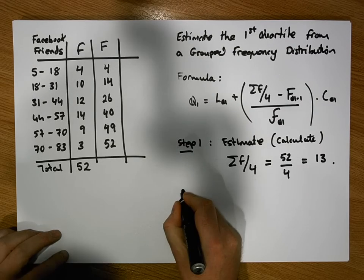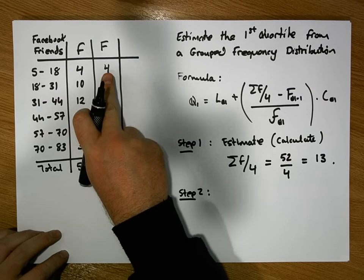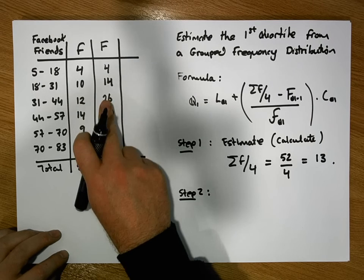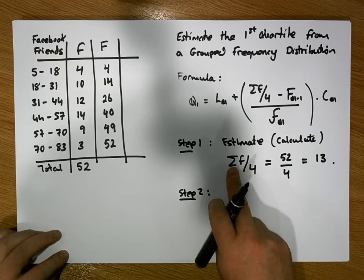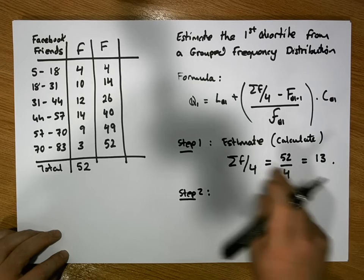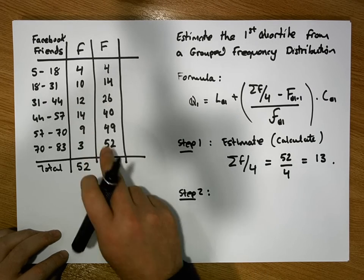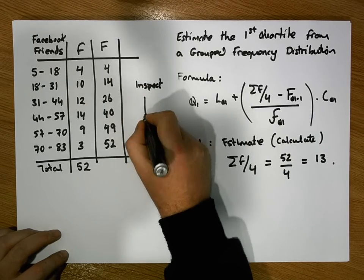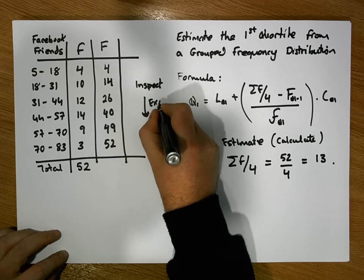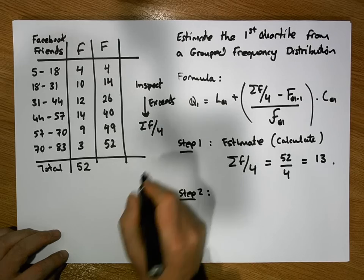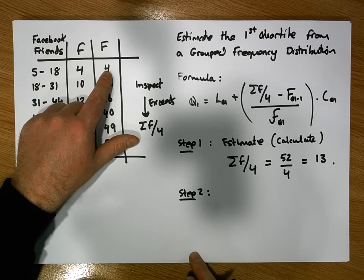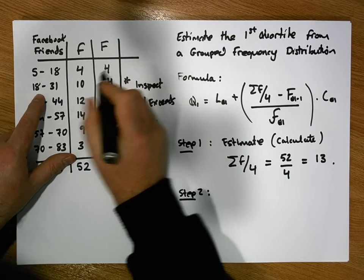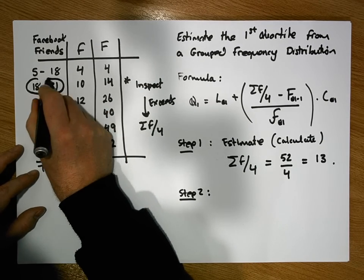In step 2, we inspect down through the cumulative frequency column until we find the first cumulative frequency that exceeds σf/4, which is 13. So we're looking for the first cumulative frequency that exceeds 13. The value 4 doesn't exceed 13, but 14 does. So we've now identified that the first quartile class is 18 to 31.